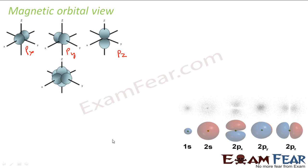We have P orbitals in different shapes. This is one where all Px, Py, Pz are combined. If you see, this is 1S, 2S is bigger. Px is oriented along the X axis, Py is along the Y axis, and Pz is along the Z axis.